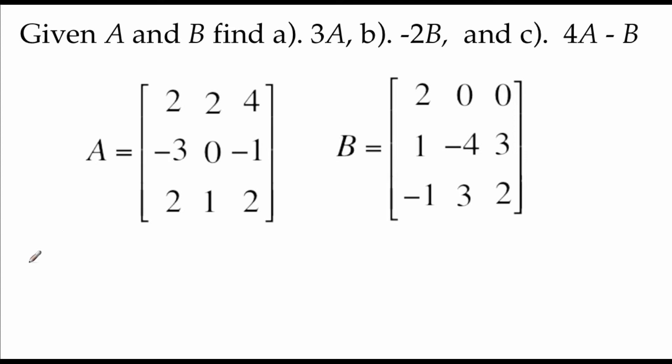First thing we're going to look at in part A is we're going to take 3 times matrix A. So this means we're going to take 3 times every single entry in matrix A. It's kind of like a distributive property. We're distributing this 3 all the way through our matrix. So 3 times 2 is 6, 3 times another 2 is still 6, 3 times 4 is 12. Second row 3 times negative 3 is negative 9. Then we get 0 and negative 3. Bottom row we get 6, 3, 6.